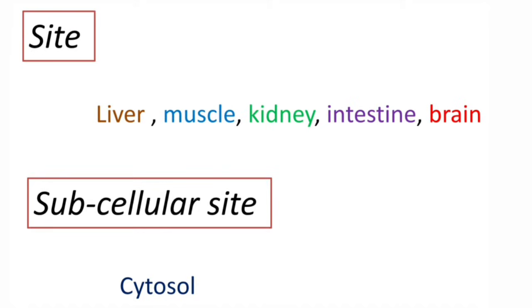Coming to sites: liver, muscle, these are the major sites of glycogenolysis. Apart from that, it also takes place in kidney, intestine, brain. And subcellular site is cytosol. All the enzymes concerned with glycogenolysis are present in the cytosol.